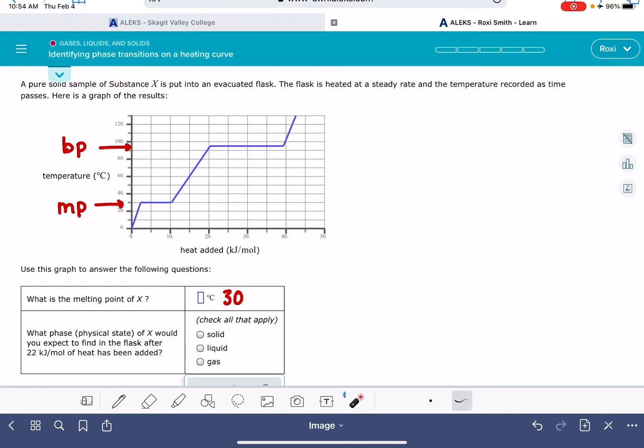The other question that you're going to be asked is what state of matter would you find after a certain amount of heat has been added. So you're going to be reading across the heat axis for the different states of matter on this heating curve. In the first slope, the first incline, this is where you have solid state. In your second incline, this is where you have the liquid state. And then your third incline, this is where you have the gas state.